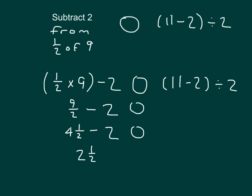Now, evaluating the other side of our comparison here, we have 11 minus 2, which is 9, and we're dividing it by 2. 9 divided by 2 is 4 and 1 half, just as we did right here. So we're comparing 2 and 1 half with 4 and 1 half, and we know that 2 and 1 half is less than 4 and 1 half.